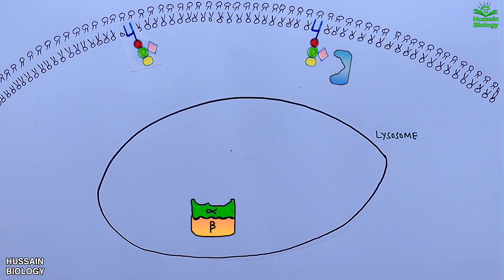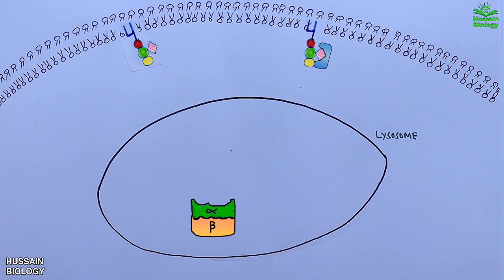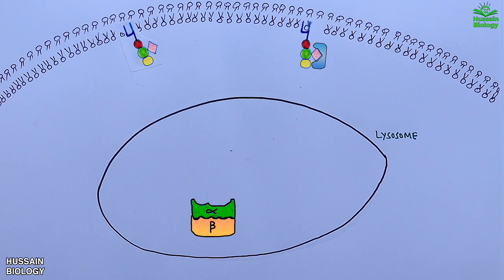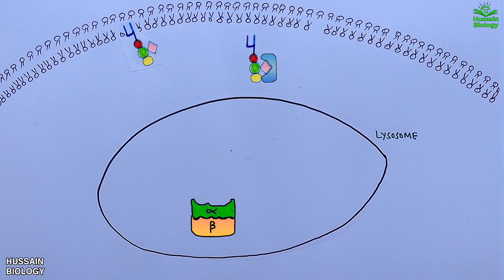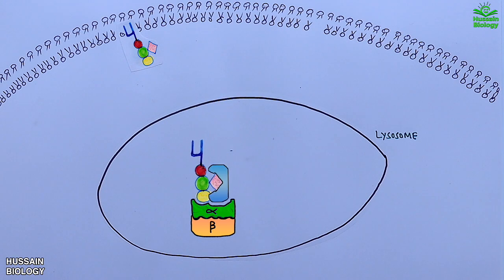The GM2 activator protein comes in and binds the GM2 ganglioside, as shown in the diagram. The binding site of GM2 activator protein is present on the N-acetylneuraminic acid of GM2 ganglioside. From here it extracts the GM2 ganglioside from the membrane and delivers it to the hexosaminidase A enzyme within the lysosome.